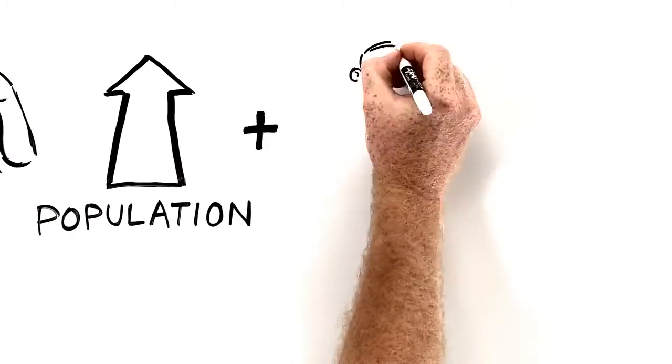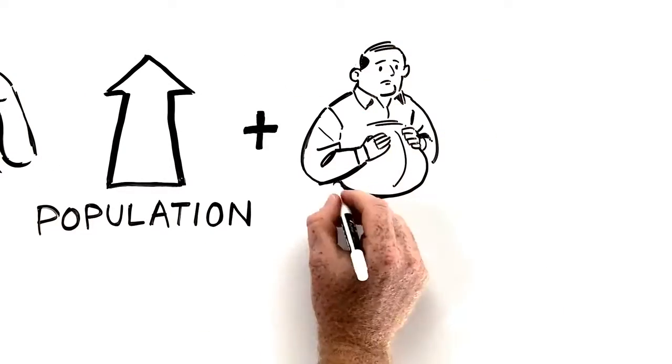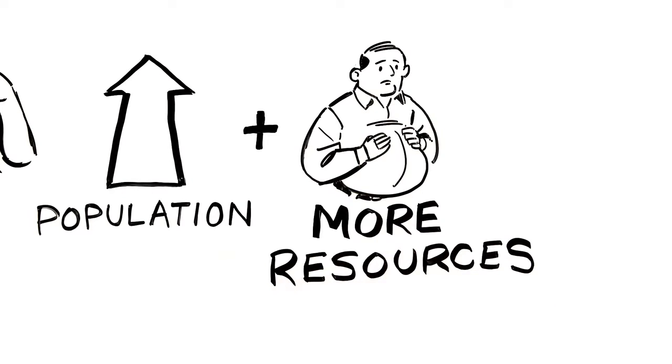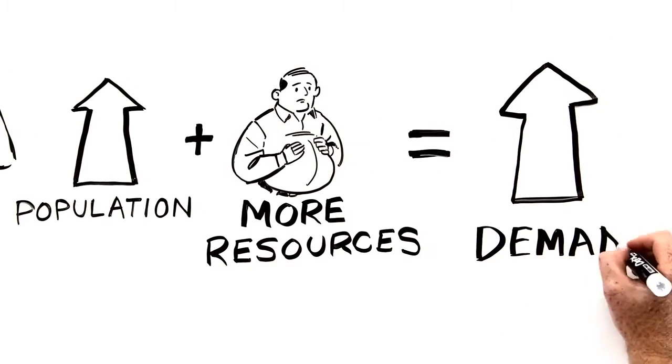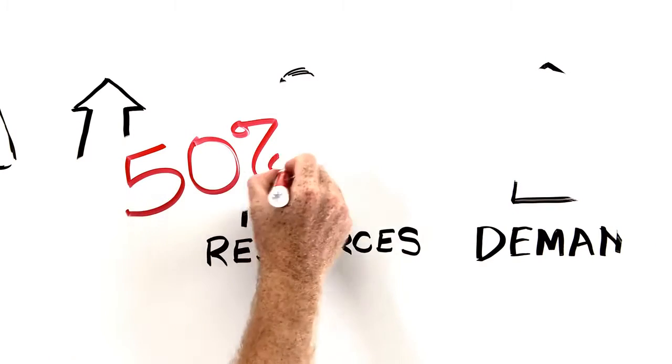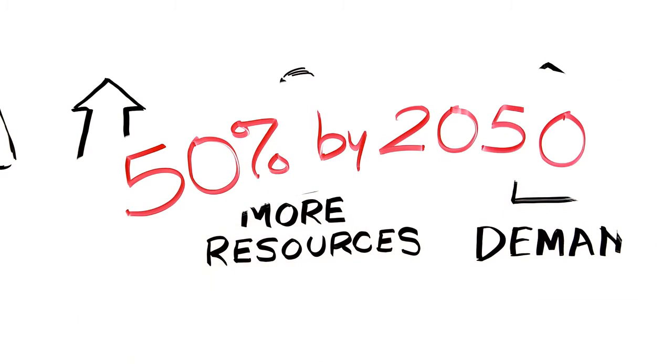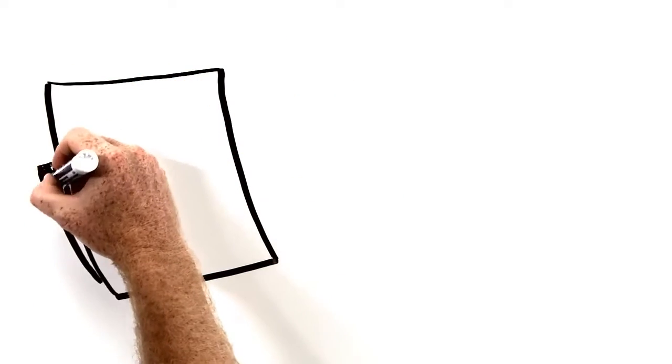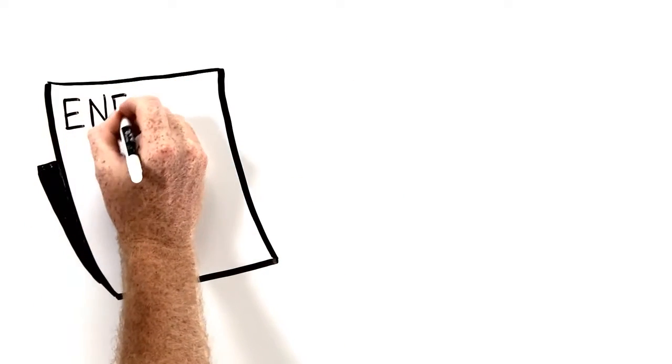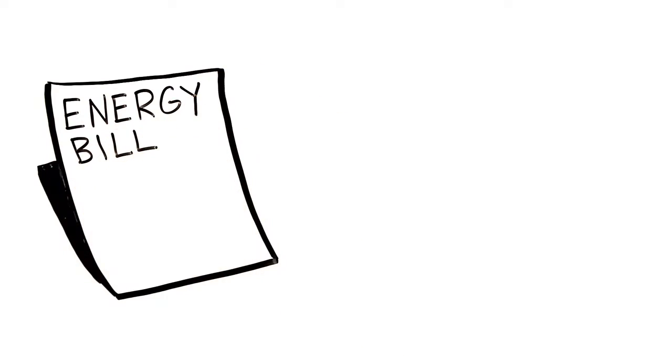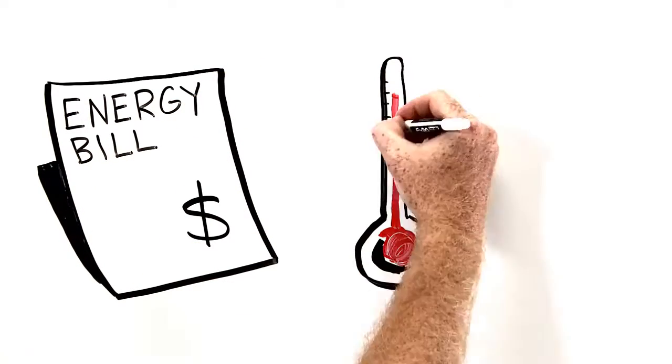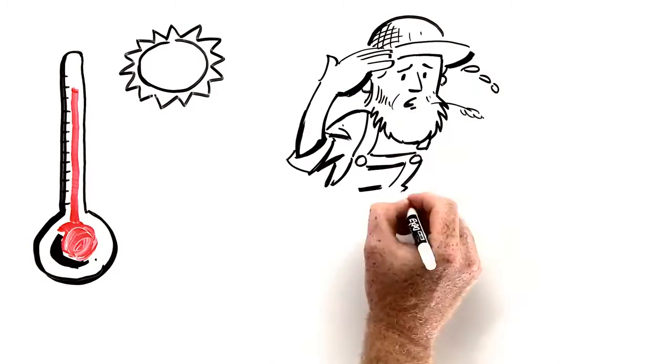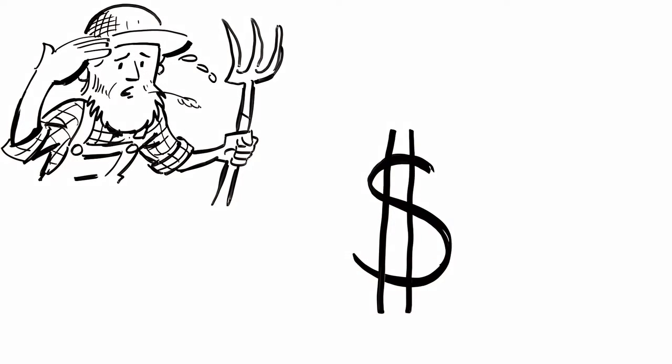Rising populations and our rich diets that take a lot more resources to produce than they used to are driving our demand for food up. And scientists figure we'll need 50% more food by 2050. But producing this food is going to be hard. This is because the rising demand is coming precisely at the same time as high energy prices and climate change are making food harder and more expensive to produce.